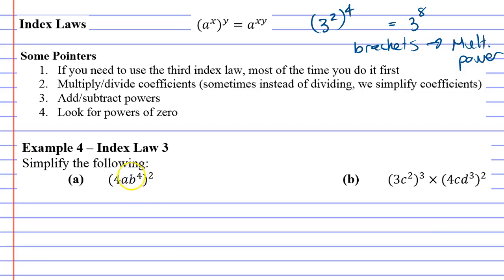Starting on question A, what a lot of people do is they just go 4 times 2 is 8, and that's not right because there's actually more than one power in here. If there's no power, we're told it's a power of 1. That's A to the power of 1. In fact, the 4 also has a power of 1.